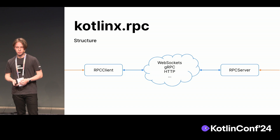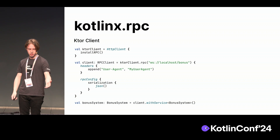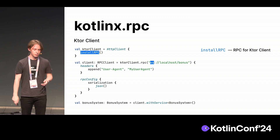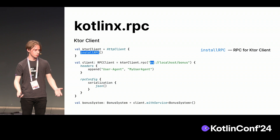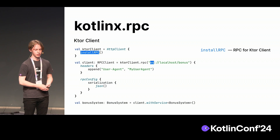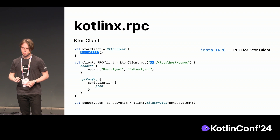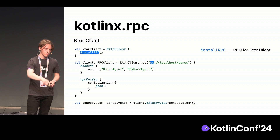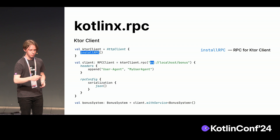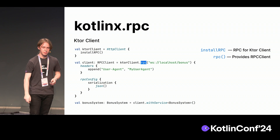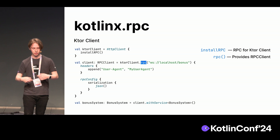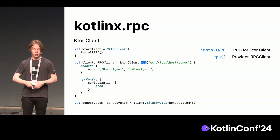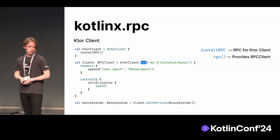Let's see an example with the Ktor application. Here's a simple Ktor client for those who use Ktor. From the RPC side, we have this installRPC function — it enables the Ktor client to work with our Kotlinx RPC library. Also, note that we use WebSocket schema to make the request, since our custom protocol uses WebSockets to transfer data. Next, we have this RPC extension function — a new function you can use to obtain the RPC client.